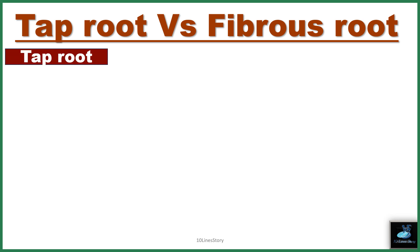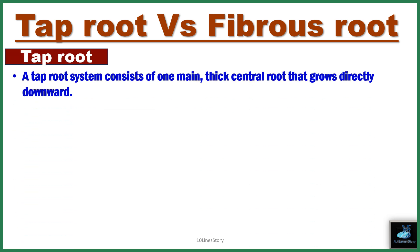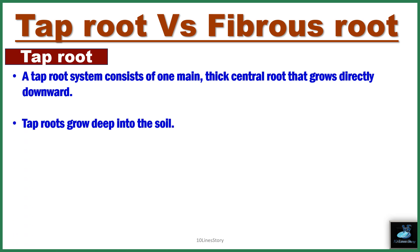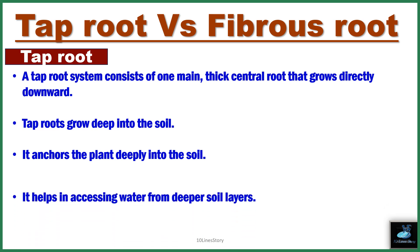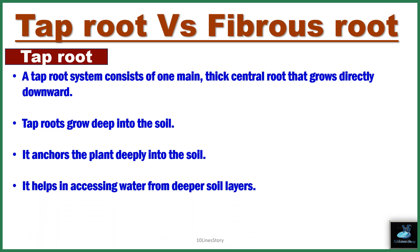We will start with Tap Root. A tap root system consists of one main thick central root that grows directly downward. Tap roots grow deep into the soil, anchoring the plant deeply. They help in accessing water from deeper soil layers. Examples: Carrot, Beetroot.